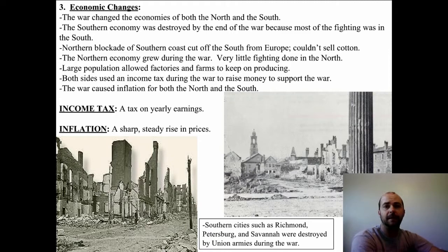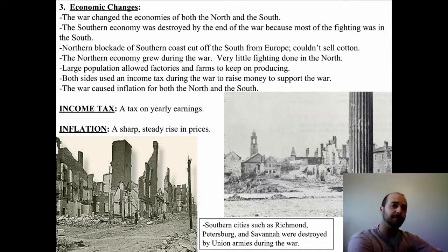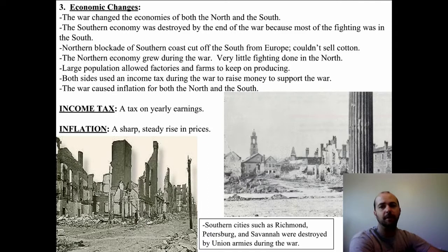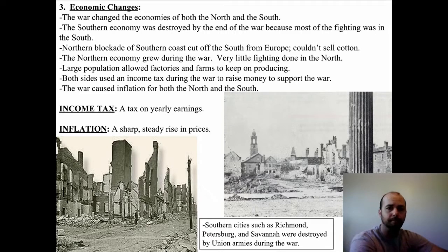The Northern economy became a lot stronger and grew because there was very little fighting done in the North. The North became reliant on their own supply channels to get the materials needed for factories, and the large population in the North allowed factories and farms to keep on producing. Both sides used an income tax during the war to raise money — if somebody earns money at their job, they have to pay a portion to the government to buy equipment, pay military people, and build weapons.